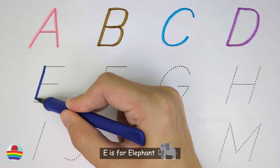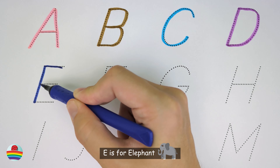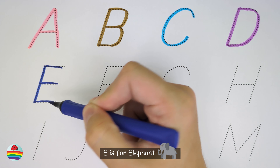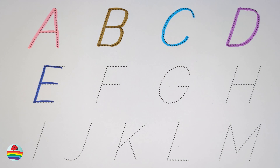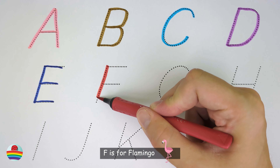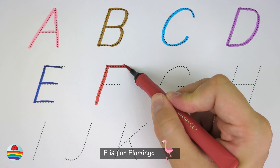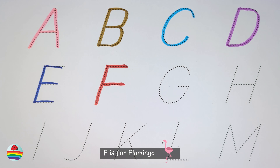E. E is for elephant. E. F. F is for flamingo. F.